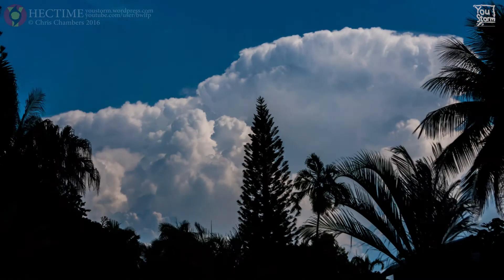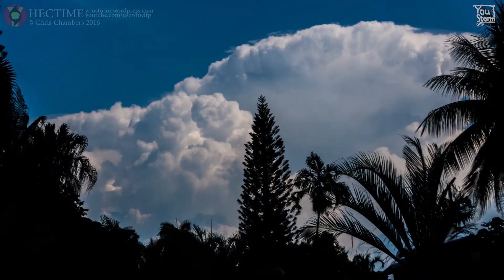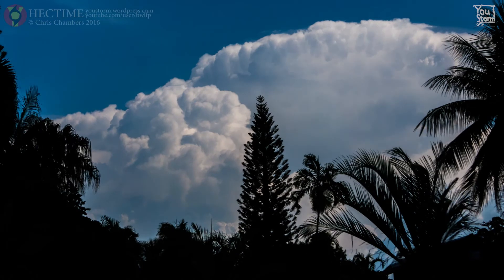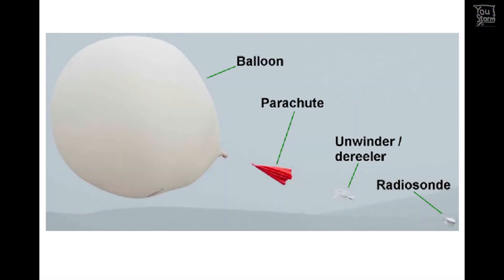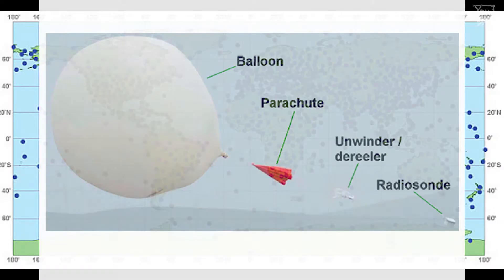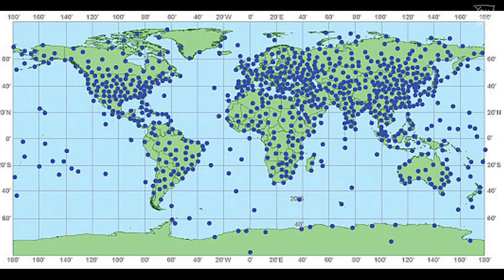So we need these Skew-T diagrams to make our prediction. They come from weather balloons that are launched on a 12-hourly universal standard time — known as UTC — schedule at many locations around the world. Specifically, they are launched at 00 UTC and 12 UTC, so yes, every 12 hours.